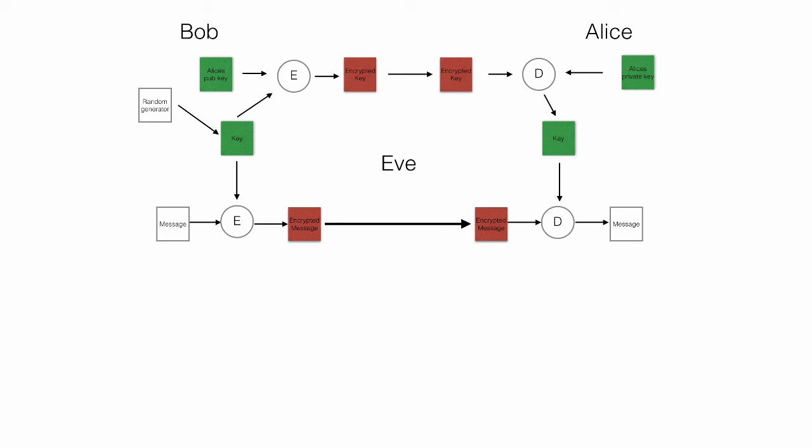When Alice receives the encrypted key she uses her private key to decrypt it. By using Alice's public key when encrypting the symmetric encryption key, Bob knows that the only person that can decrypt it is Alice — because the only key that can decrypt information encrypted with Alice's public key is Alice's private key. So Alice decrypts the symmetric encryption key and with that she can decrypt the apple pie recipe.